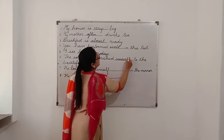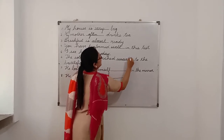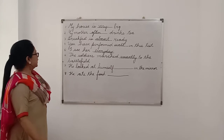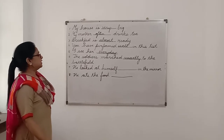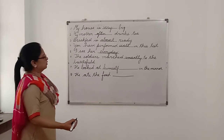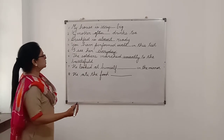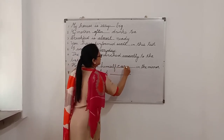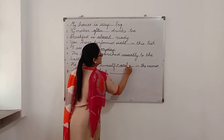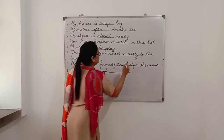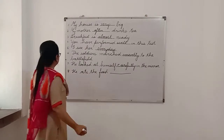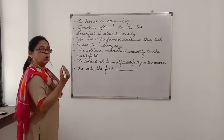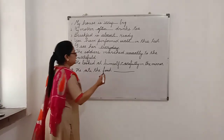I am writing 'smartly' here. Number 7: 'He looked at himself ___ in the mirror.' — 'He looked at himself carefully in the mirror.' And the last one, number 8: 'He ate the food ___' — 'slowly,' 'quickly' — anything works.